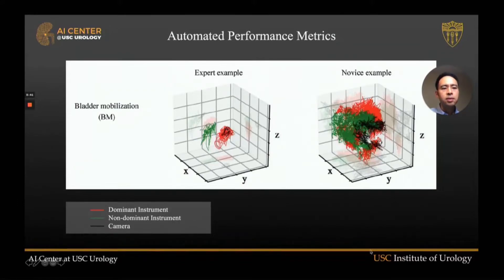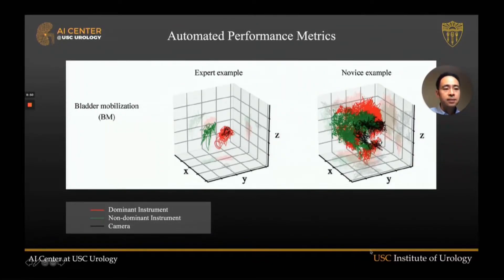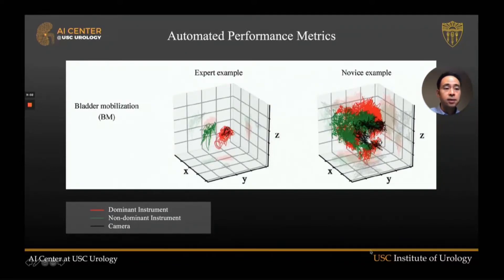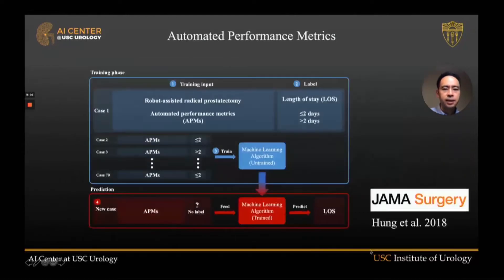Two surgeons performing the exact same step of the prostatectomy: one is an expert, the other a novice. They are doing the same step but look completely different. The red is the tip of the right-hand instrument, the green is the tip of the left-hand instrument, and the black is the endoscope — a clear illustrative example of how surgery looks different using motion tracking data.